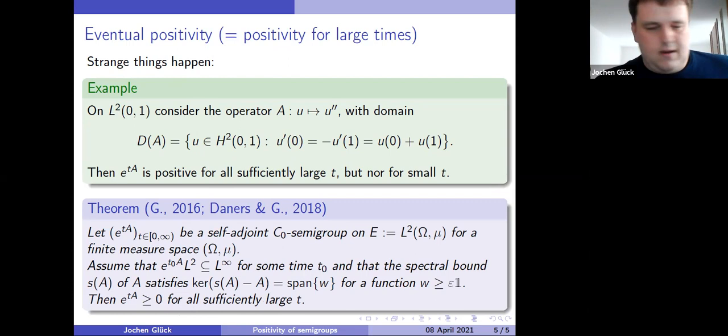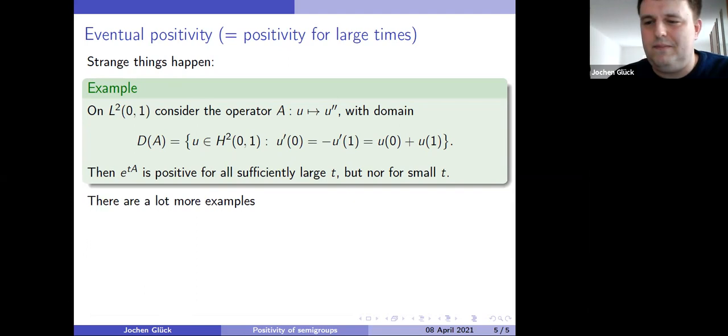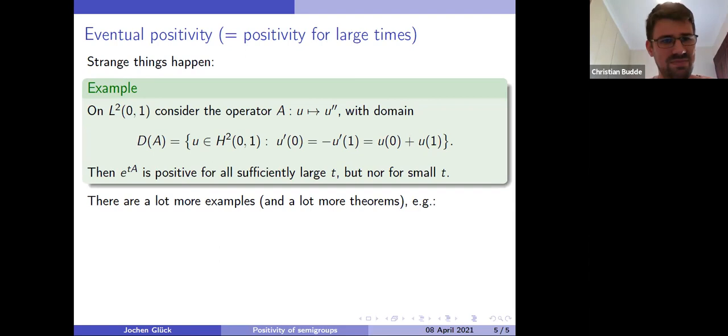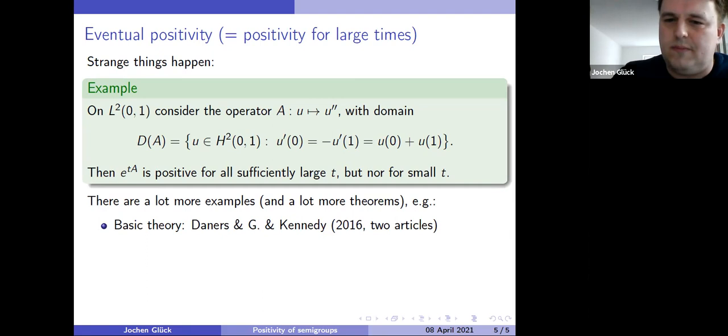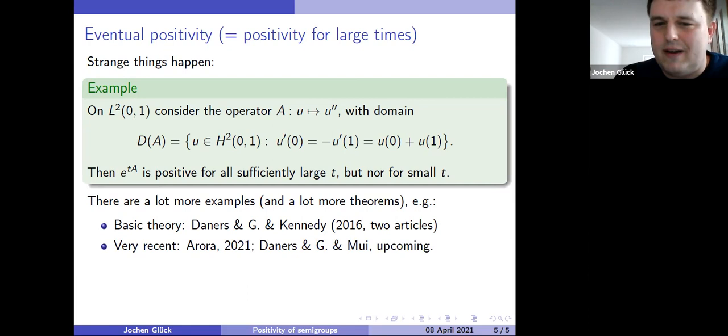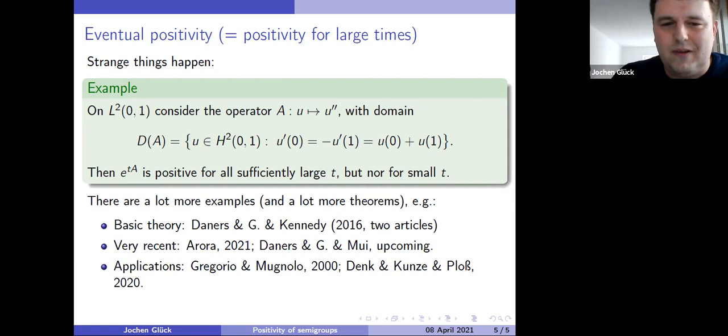And there are a lot of more examples. That's just a toy example here. Maybe please come to an end in maybe one minute. Yeah, I don't need a minute, 30 seconds. Thank you. A lot more theorems. For instance, basic theory about eventual positivity, Daners and myself. More interesting, you might have heard two talks by Sahiba Arora and Jonathan Mui on this conference, who proved more recent results on eventual positivity. You can find applications of eventual positivity in various PDEs. So for instance, Gregorio and Mugnolo proved, no, that's not 2000, that's 2020, eventual positivity for semi-groups on graphs. And also on this conference, David Mugnolo gave a talk about, and he mentioned at the end, eventual positivity of bi-Laplacian operators with Wentzell boundary conditions. So that's everything I wanted to say. Thank you very much for your attention.